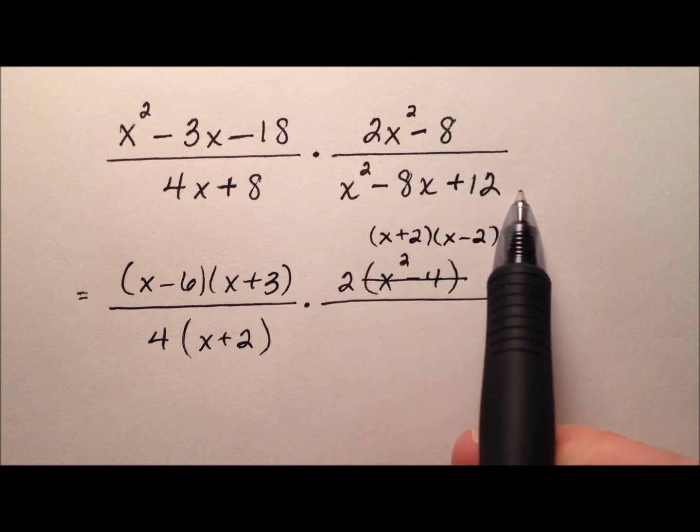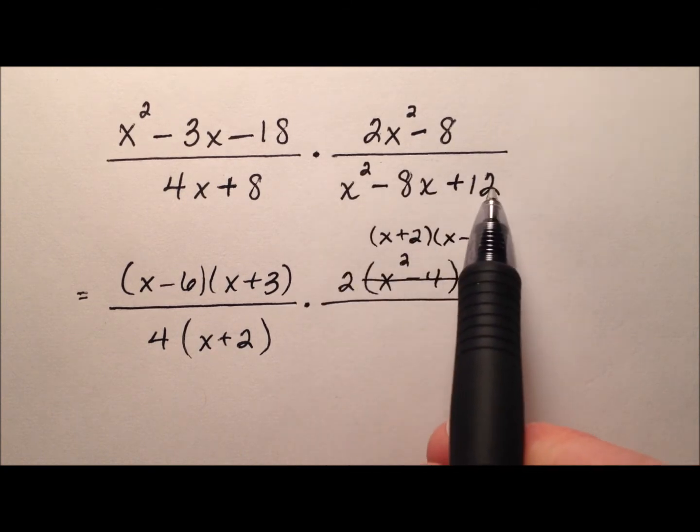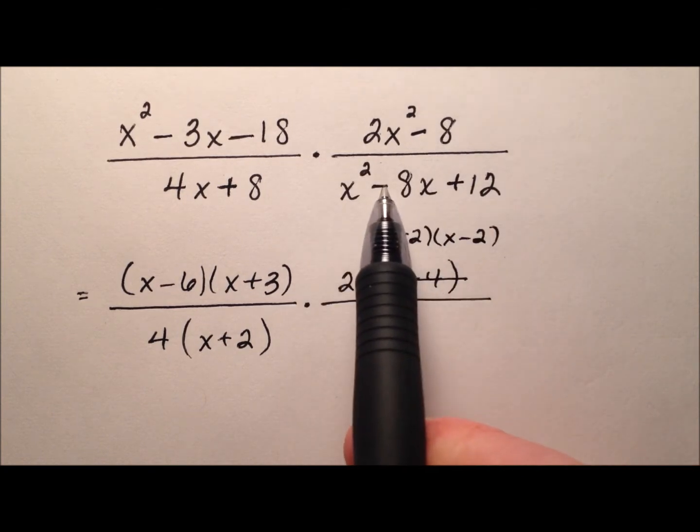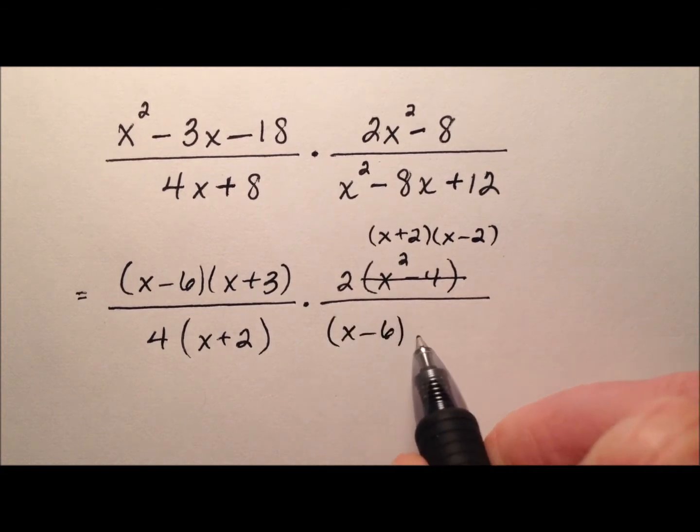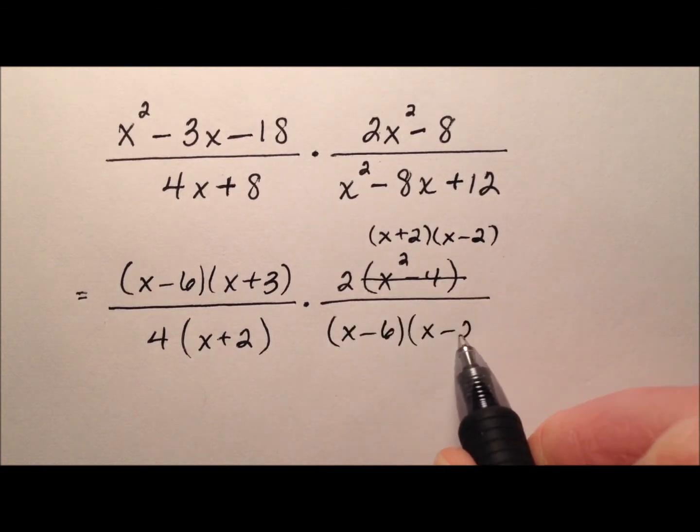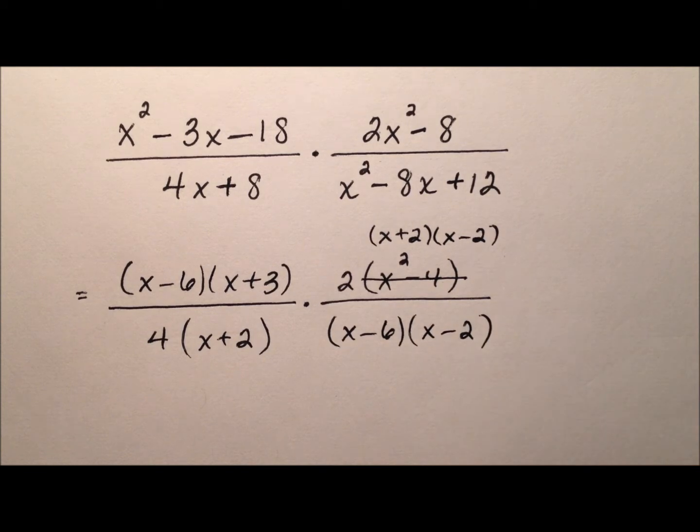And finally, this last quadratic: what two numbers multiply to make positive 12 that add to make negative 8? Looks like (x - 6) and (x - 2).